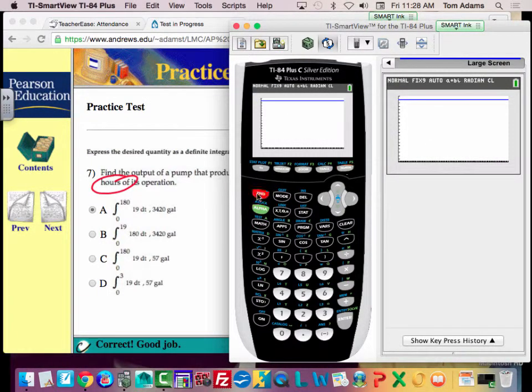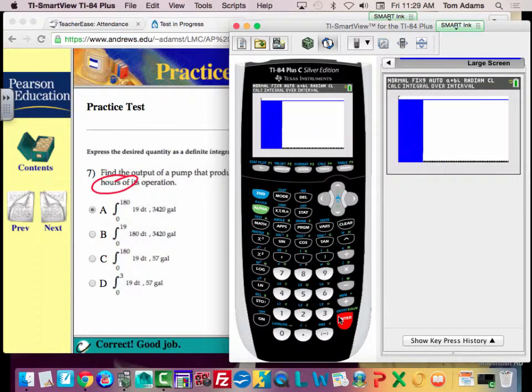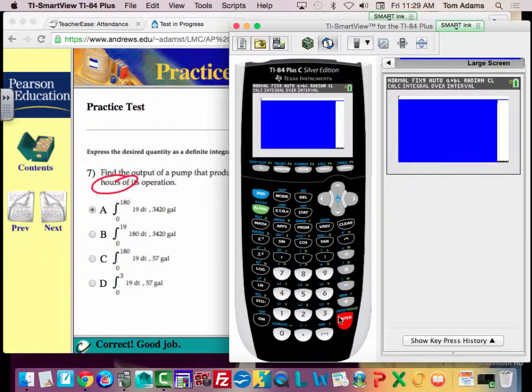So now I just want to evaluate the area under the curve from zero to 180. So my lower limit is zero, my upper limit is 180, and when I evaluate this it'll be 3420. Does that make sense? Booyah. Okay.